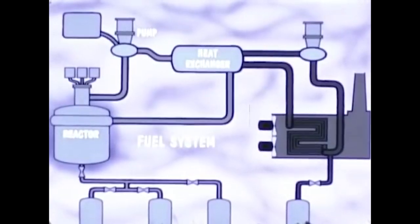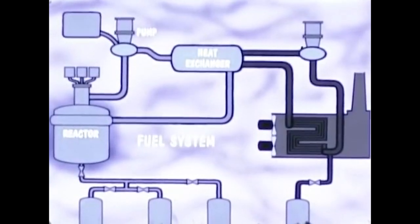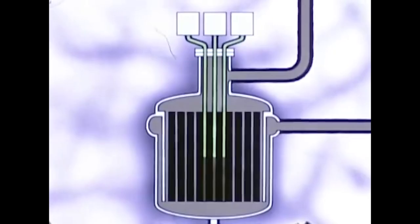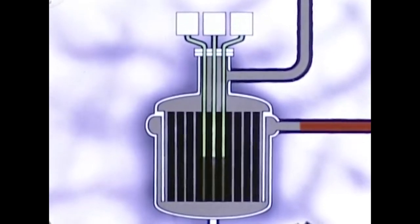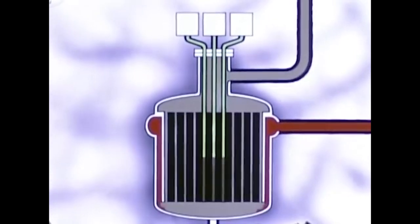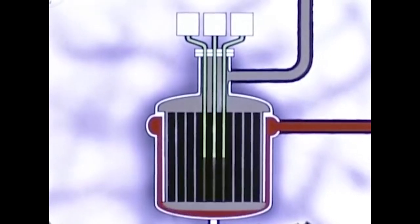MSRE is a circulating fuel graphite moderated single region reactor. During operation, fuel, which is nearly as fluid as water, enters the flow distributor near the top of the vessel and spirals downward in turbulent flow through the space between the vessel and core can.